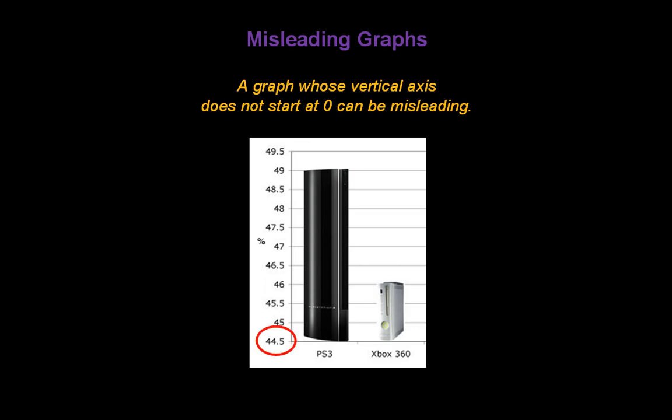The axis starts at 44.5%. In this survey, 49% of the people said they preferred the PS3, and 46% said they preferred the Xbox 360. More people did prefer the PS3, but that's only a difference of 3% — not three times as many people. That's why a graph whose vertical axis doesn't start at zero can be misleading.